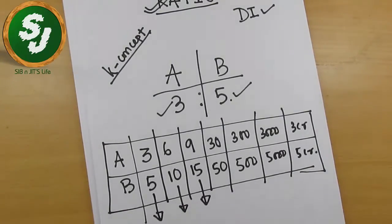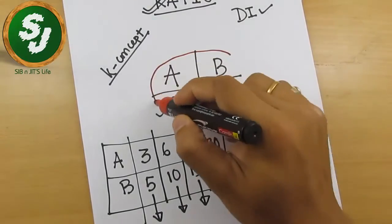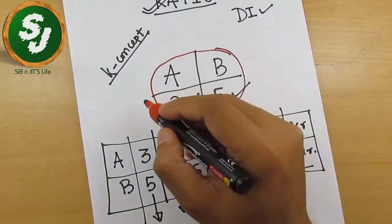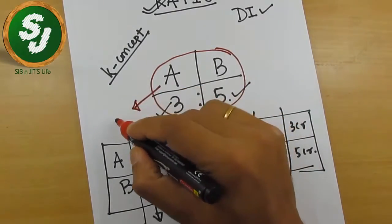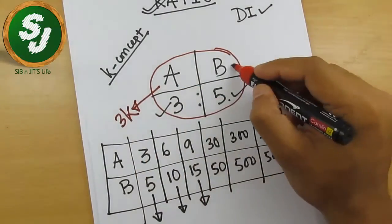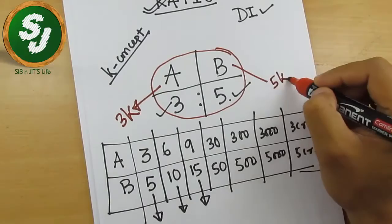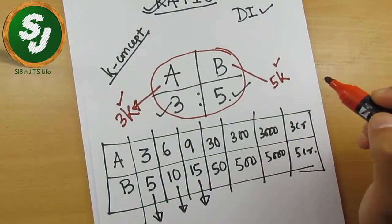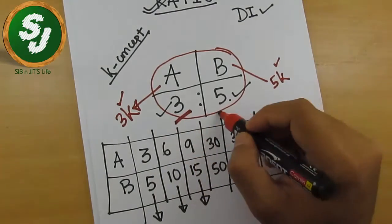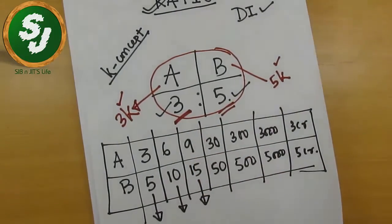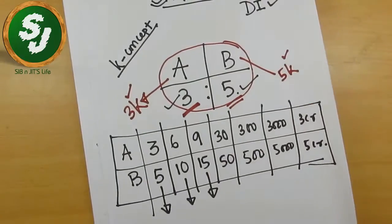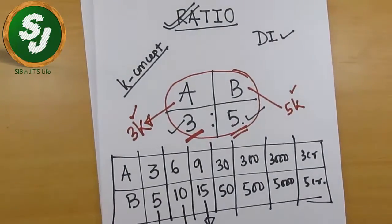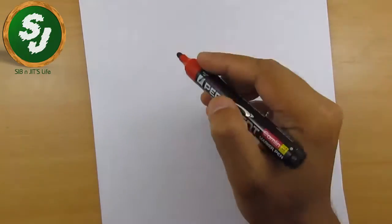So in other words, I can tell you that if this information, A is to B is given, I can write in another way that A has 3K rupees and B has 5K rupees. K is a constant multiple which has to be multiplied with this ratio numbers.